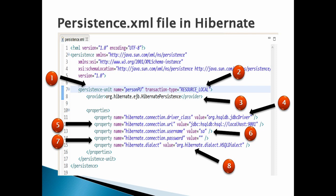Number five: in persistence.xml we have to provide the URL to the HSQL database server. It takes a property named 'hibernate.connection.url' with value 'jdbc:hsqldb:hsql://localhost:9001'. This tells Hibernate to point to the HSQL database server at the mentioned URL and port.